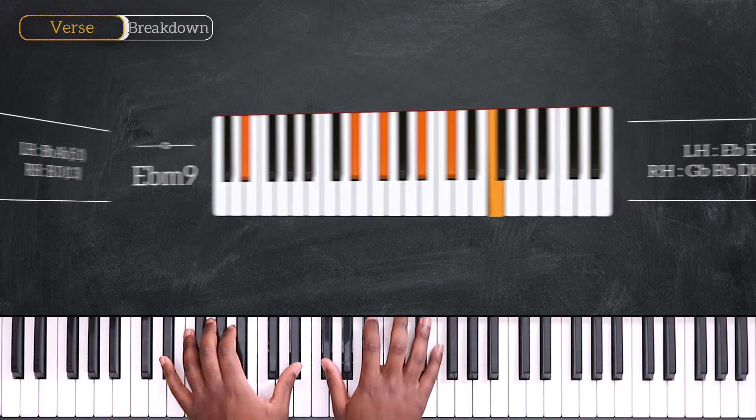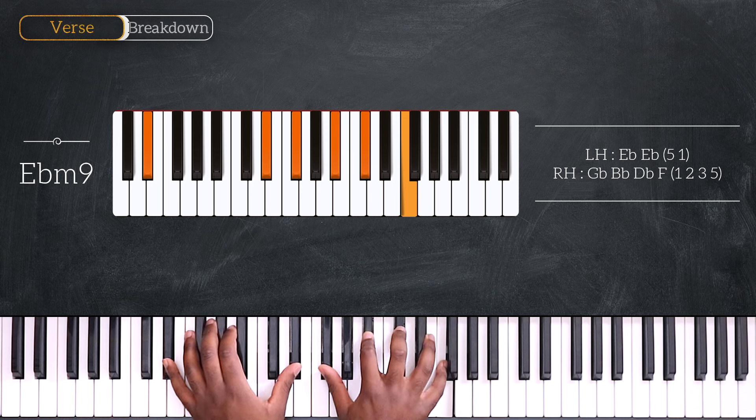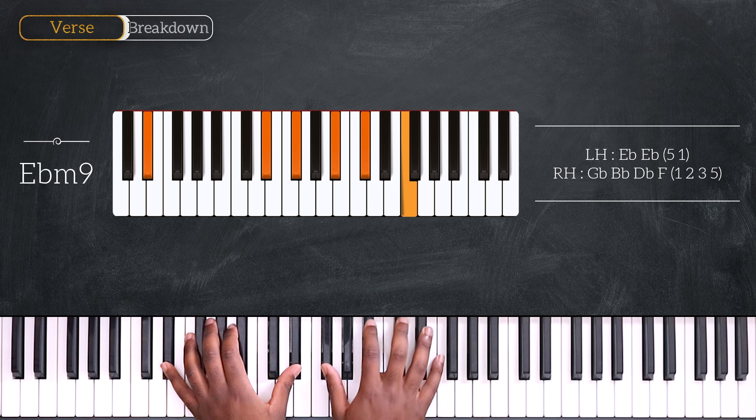Let's continue. Eb minor 9, octave Eb, Gb, Bb, Db and F on top. So we have the minor 3rd, the 5th, the 7th and the 9th.